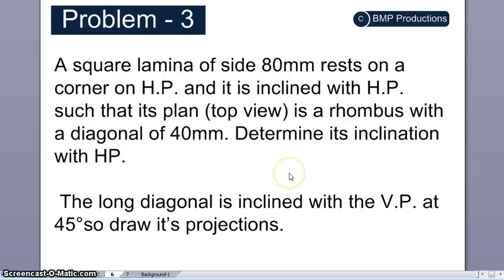Hi, this video is about projection of planes. Here is the problem statement: a square lamina of side 80mm rests on a corner on the horizontal plane, and it is inclined with the horizontal plane so that its plan or top view is a rhombus with a diagonal of 40mm.